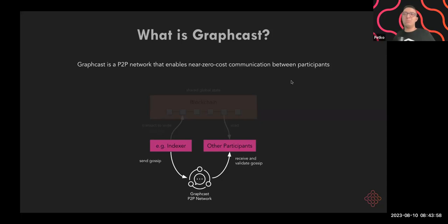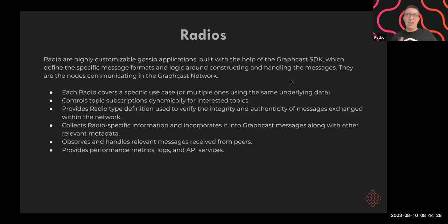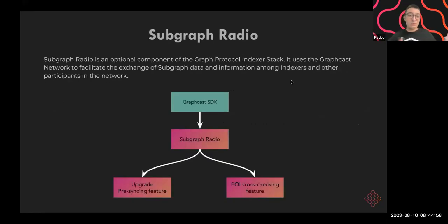The Graphcast SDK is the base layer that interfaces with components of the Graph stack — including interactions with Graph Node, optionally the indexer management server, and also the core network and registry subgraphs. The SDK is written in Rust and distributed as a Rust crate on crates.io. Radios are highly customizable applications built with the SDK that define specific message formats and logic around constructing and handling messages relevant to that radio. Radios are effectively the nodes communicating in the Graphcast network, also written in Rust.